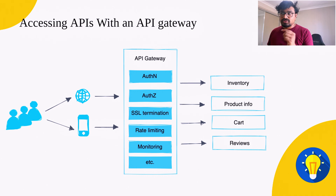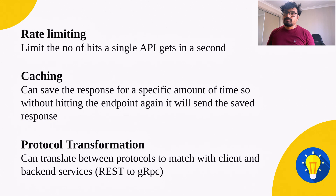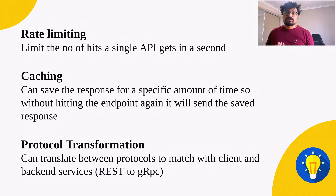Since all requests come through the API gateway — it acts as the single entry point — we can do authentication and authorization there. We can also do rate limiting: limiting the number of hits a single API gets per second. Because all requests go through the API gateway, rate limiting is easy to enforce from that level.